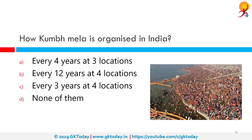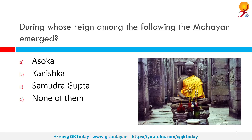How is Kumbh Mela organized in India? The correct answer is every 12 years at four locations. Kumbh Mela is organized every 12 years at four locations which are Allahabad, Nasik, Haridwar, and Ujjain.